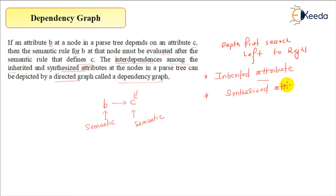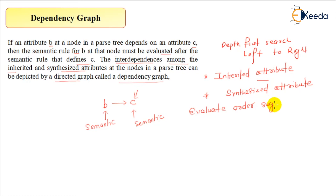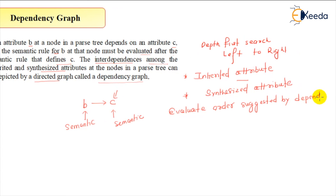For both types of attributes we can draw the dependency graph, and once the dependency graph is drawn, we can evaluate the attributes in the order suggested by the dependency graph. That is how the dependency graph is related to the evaluation of attributes. In the next section we will talk about how we can evaluate the dependency graph.